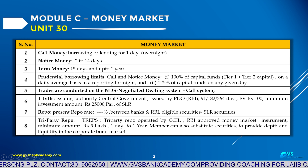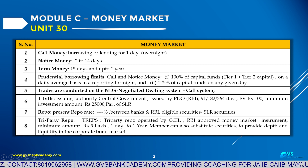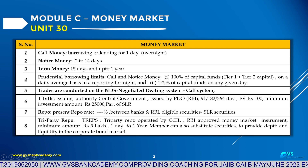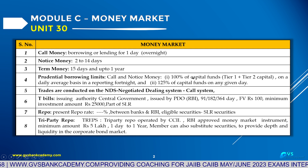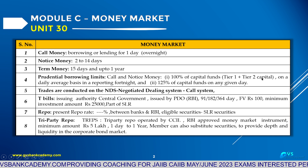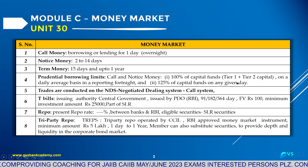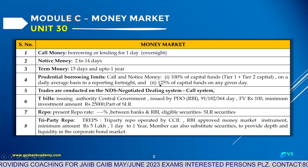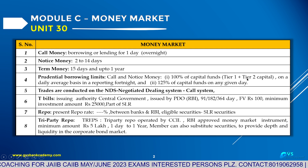What are the prudential limits for scheduled commercial banks borrowing from Call Money and Notice Money? Scheduled commercial banks, including Regional Rural Banks, are allowed to borrow 100% of capital funds — that is, Tier 1 and Tier 2 capital — on a daily average basis during a fortnight. On any given single day during the fortnight, they are allowed to borrow up to 125% of capital funds.